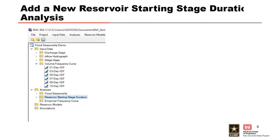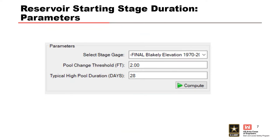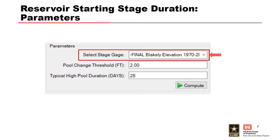Within RFA, to add a new starting stage duration analysis, you can right-click on the analysis tab or select the analyses from the drop-down menu. You'll enter a name and description just like anything else in RFA, and then you'll enter the analysis parameters. The analysis parameters are shown on the right. There are three parameters to the starting stage duration analysis. The first is a stage gauge — you have to select the stage gauge that was discussed in the previous lecture and use that as your input here.